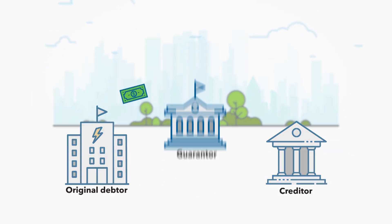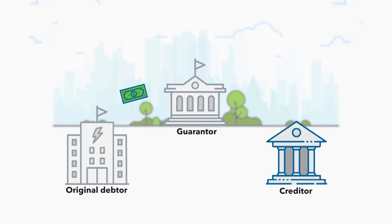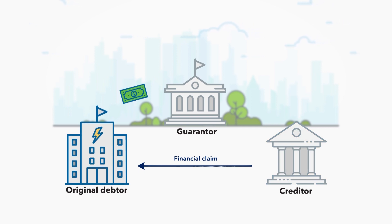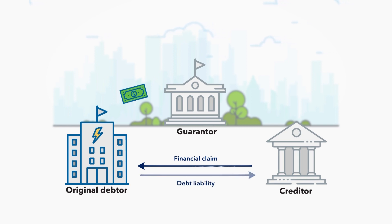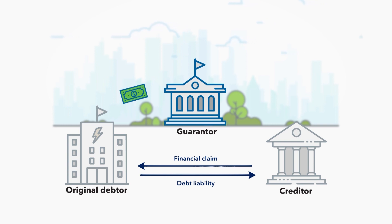Let's say a state-owned enterprise borrowed $100 from a local bank. This loan is guaranteed by the central government. The local bank is the creditor and has a financial claim on the state-owned enterprise. The state-owned enterprise is the original debtor and has a debt liability to the local bank. As guarantor, the central government does not incur a liability of $100 on its balance sheet. But, by issuing the guarantee, it does create a potential fiscal risk for itself.